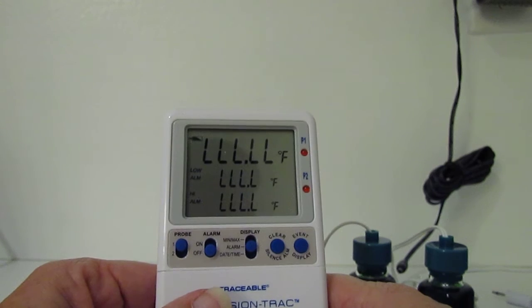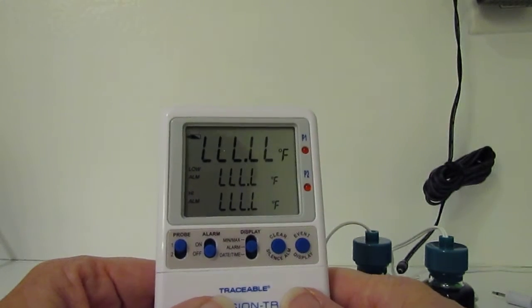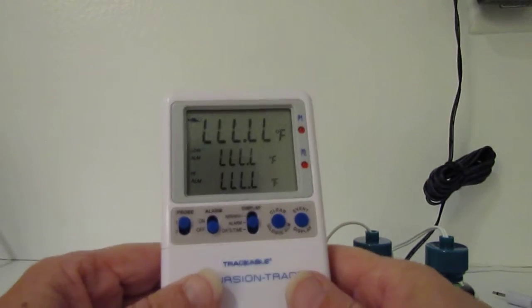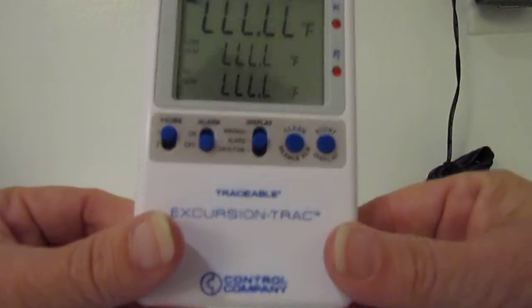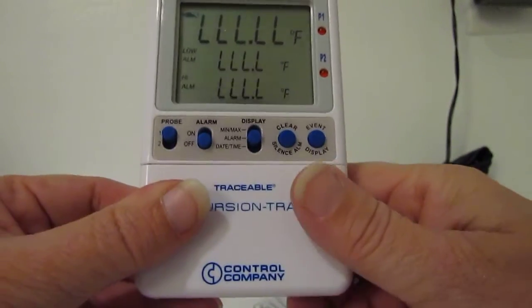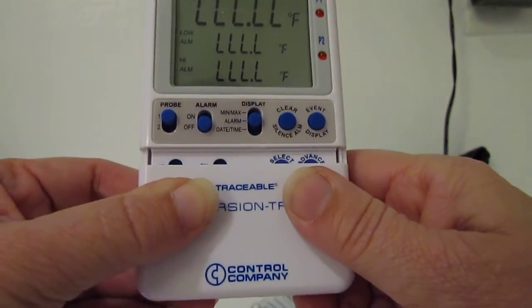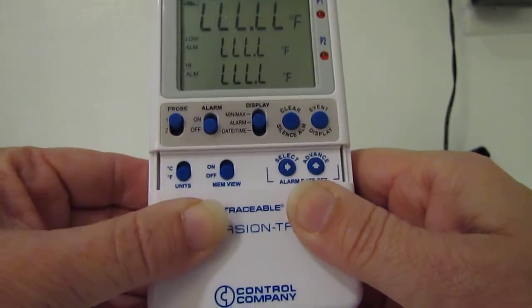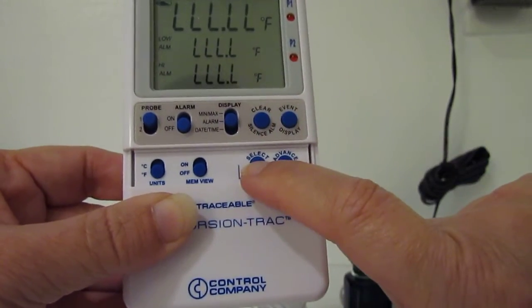The next thing, if you look at the directions and it tells you to set the date and time, it tells you to press the select key. But if you look here, you don't see a select key. If you look up on those directions, you'll notice that there's a little door here that you can slide down and there is your select key.